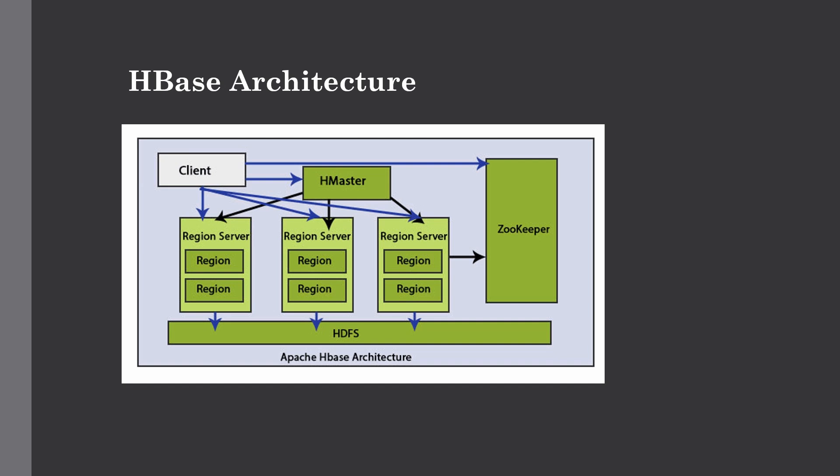ZooKeeper is another open source project which provides services like maintaining configuration, naming, and providing distributed synchronization in the system. It has informal nodes representing different region servers, and these nodes are used for tracking server failures and network partitions. Clients can communicate with region servers via ZooKeeper, so it acts as a mediator which assigns regions to region servers and facilitates client-to-region-server communication.